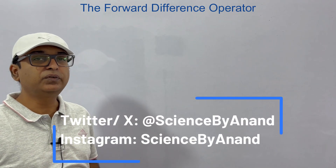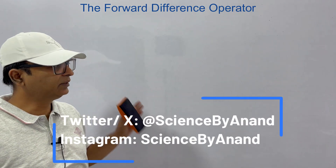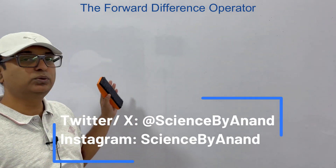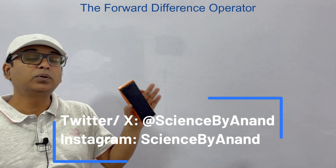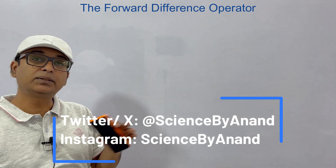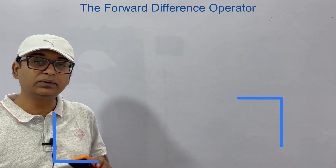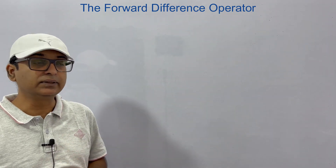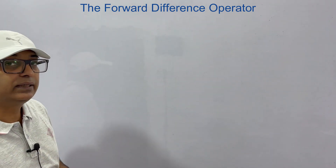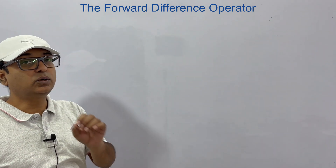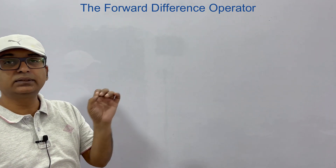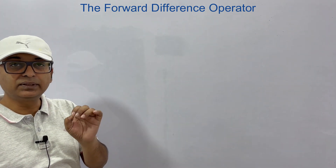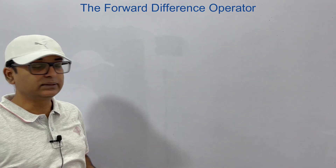Up till now, what we have seen? We have understood what is forward difference, what is backward difference and what is central difference. And we have seen the operators for forward differences, backward differences and central differences.